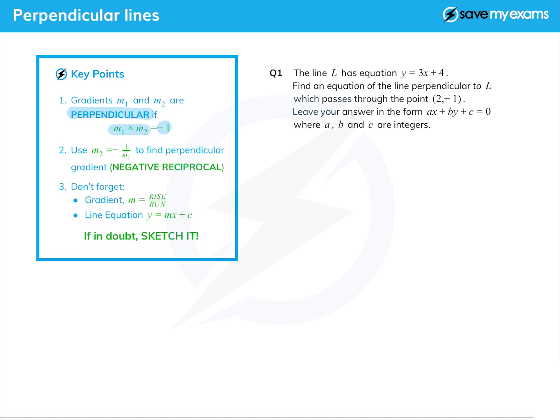You can remember this as one is the negative reciprocal of the other - m2 is minus one over m1 - but it's just as easy to remember that they multiply together to give minus one.